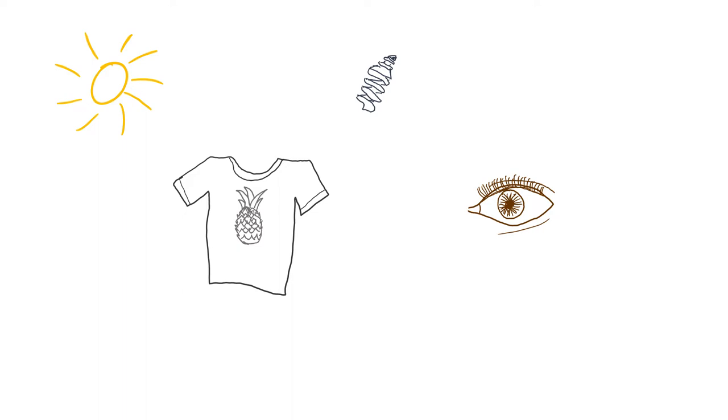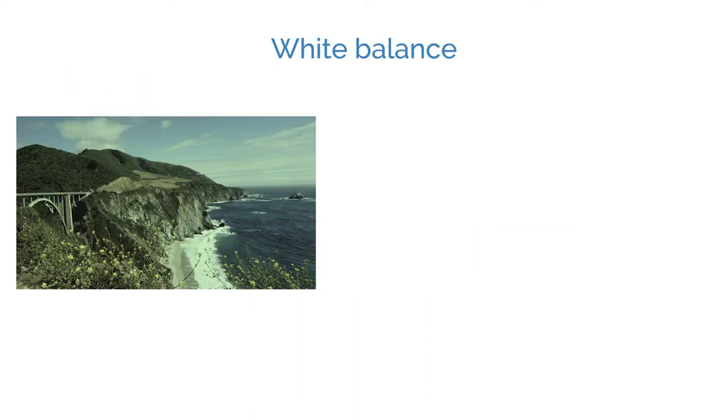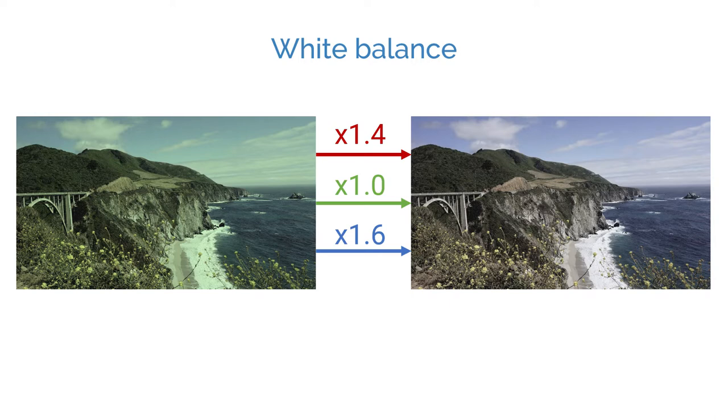For example, a white shirt looks white to us whether we see it indoors or outdoors. This is what white balancing algorithms aim to achieve. They compensate for the color differences based on lighting by applying a gain factor on the color channels so that a white shirt appears white regardless of the source of the light.